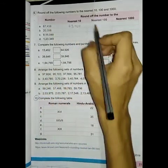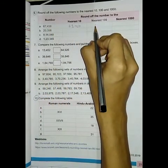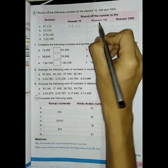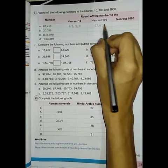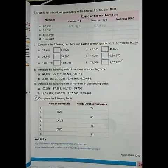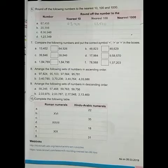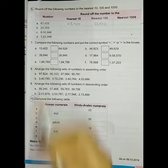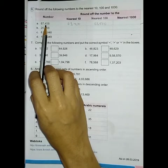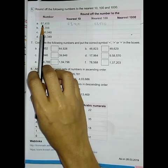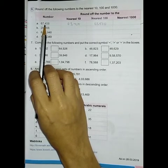For the nearest hundred, you look at the tens place. For the nearest thousand, you look at the hundreds place. If you have five or greater in that place value, you round up to the next position.